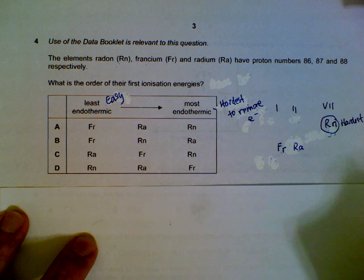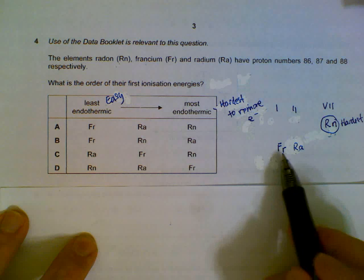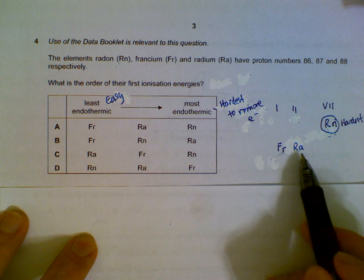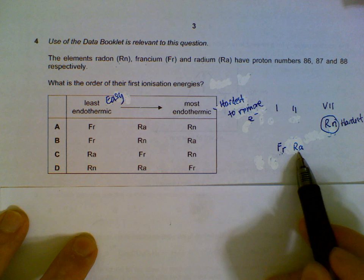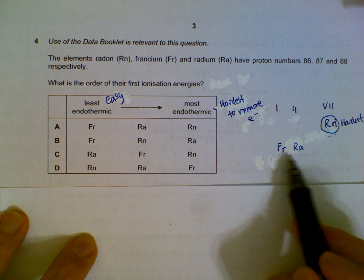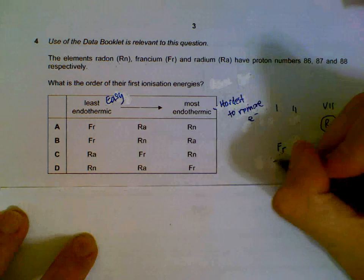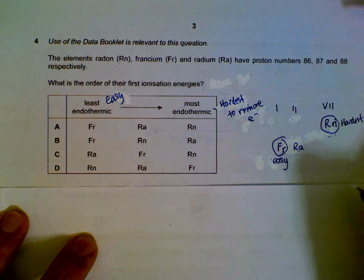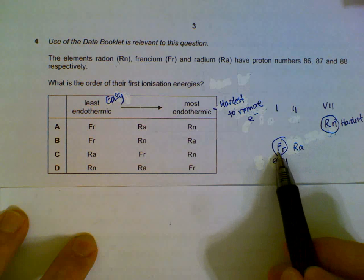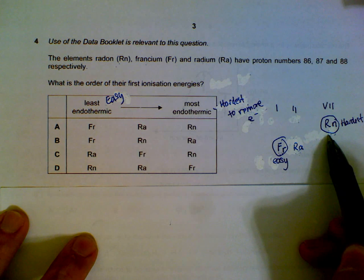Radon is the hardest to remove the first electron from. Between Francium and Radium: Francium has fewer protons than Radium, so it doesn't have as strong an attraction to the outer electron. Francium holds its outer electrons less tightly, making it easier than Radium. So among all three: Francium is least endothermic, then Radium, then Radon. The answer is A.